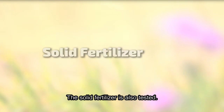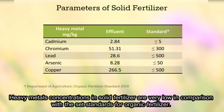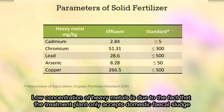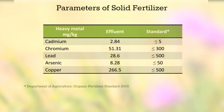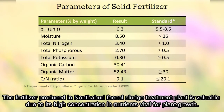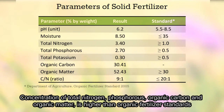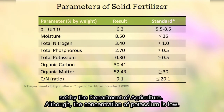Solid fertilizer is also tested. Heavy metal concentrations in the solid fertilizer are very low compared to the set standards for organic fertilizer. This low concentration is due to the fact that the treatment plant only accepts domestic fecal sludge, which normally contains very low concentrations of heavy metals. The fertilizer produced at Nontaburi is valuable due to its high concentration of nutrients vital for plant growth. Concentrations of total nitrogen, phosphorus, organic carbon, and organic matter are higher than organic fertilizer standards set by the Department of Agriculture, although the concentration of potassium is low.